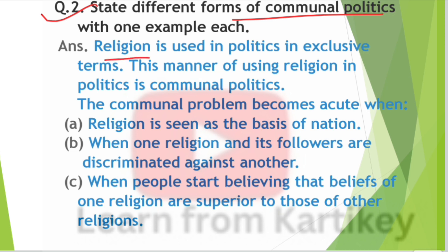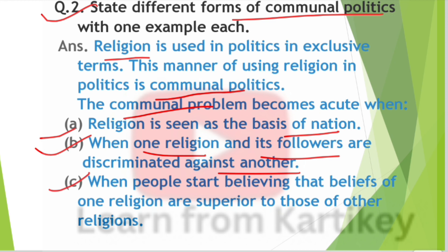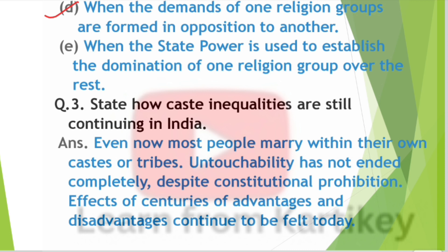Question number 2: State different forms of communal politics with one example each. Religion is used in politics in exclusive terms — this manner of using religion in politics is communal politics. The communal problem becomes acute when: religion is seen as the basis of nation; one religion and its followers are discriminated against another; people believe one religion's beliefs are superior to others; demands of one religious group are formed in opposition to another; and when state power is used to establish the domination of one religion group over the rest.